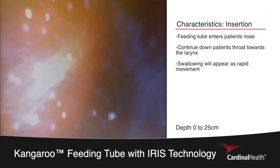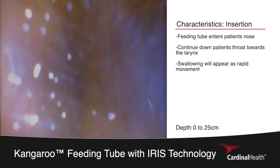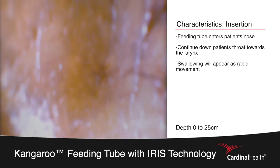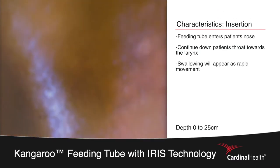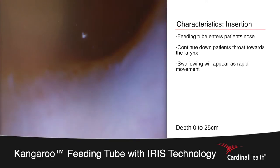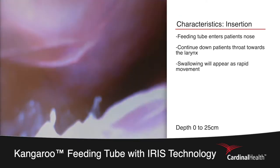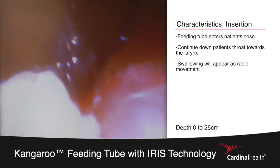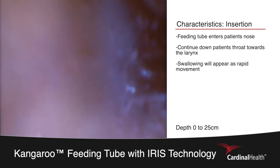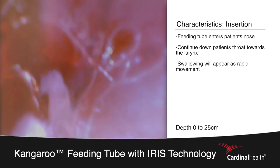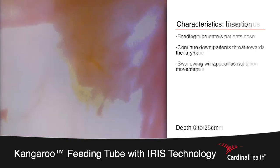The procedure begins with a placer inserting the feeding tube into the patient's nose, as can be seen here by the nasal hairs. The tube will then progress down the back of the patient's throat heading towards the larynx. The patient is swallowing, so we'll see some rapid movement as it quickly progresses down into the esophagus.